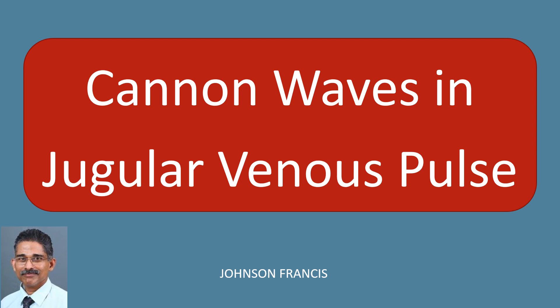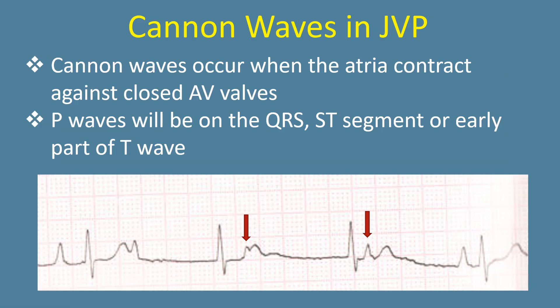Cannon waves in jugular venous pulse. Cannon waves occur when the atria contract against closed AV valves. On ECG, P waves will be on the QRS, ST segment, or early part of the T wave.